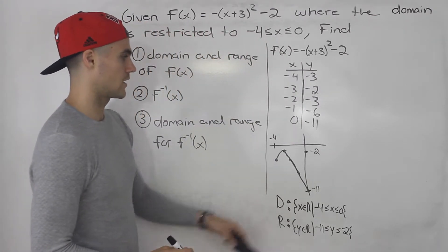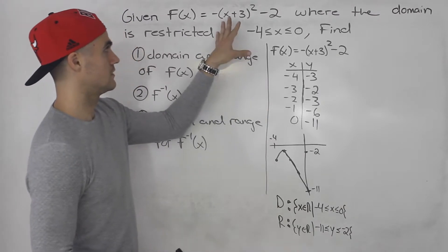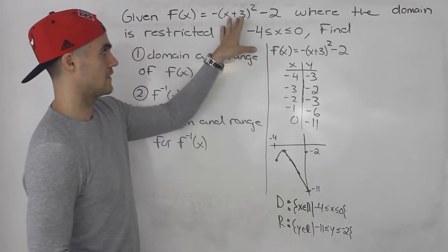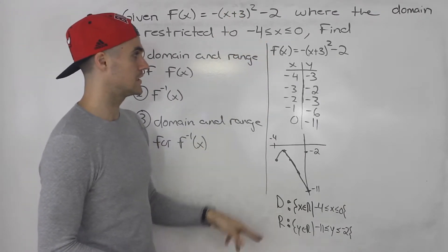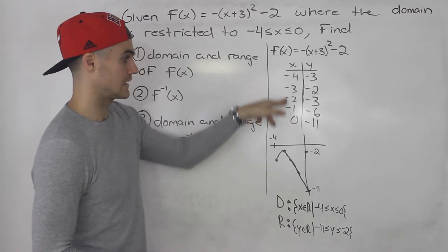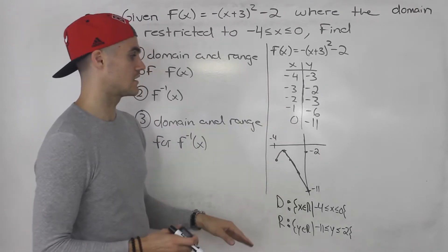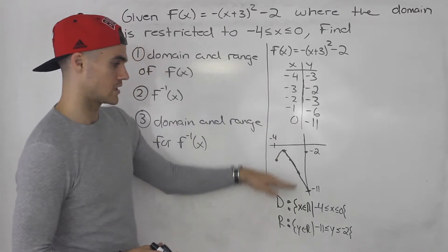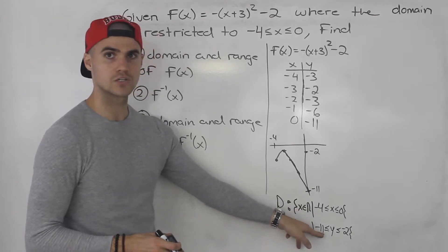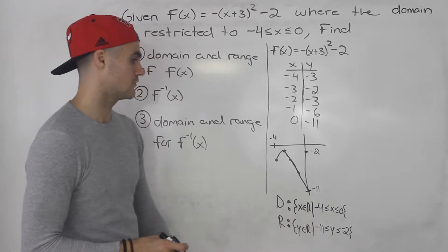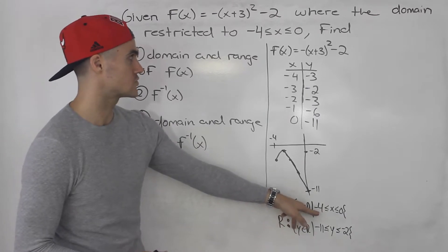So that's the domain and range for the function. Whenever you're given a function with a restricted domain, my recommendation: make a table, graph it, so you can visually see how the range is restricted as well. Getting this restriction on the range — that's the tricky part. We already know the domain is restricted; it's getting the restrictions on the range, and it's best to see it visually.